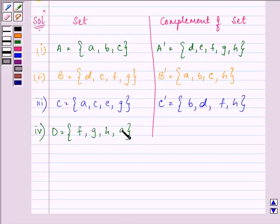So, the elements of D complement will be B, C, D, and E.